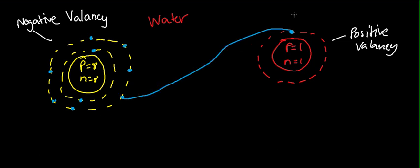This electron comes here. So, now, hydrogen, the electron requirement for hydrogen is complete. It has donated its one and only electron.